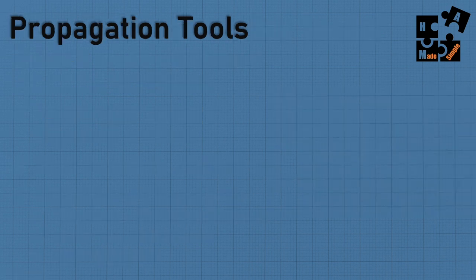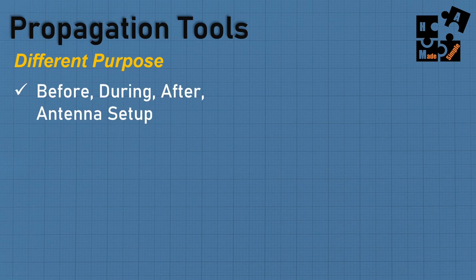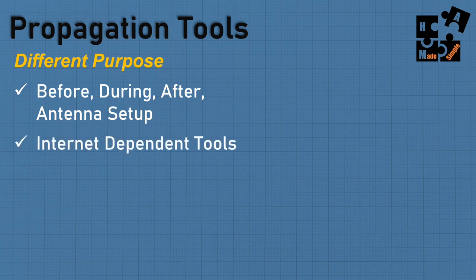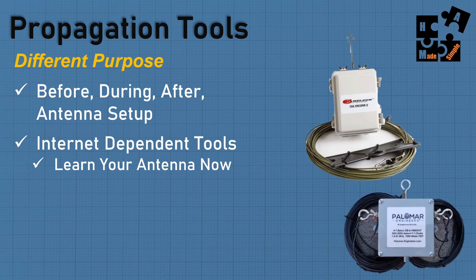There are different tools out there, and they all serve different purposes. One I'll use before I even transmit to find out what's out there. There are ones you can use during transmission, and ones you use after to see where you've been. Someone's going to say these are internet-dependent tools — yes, they are. So when stuff hits the fan, they're not going to be available. That's why you need to learn these tools now and how they work with your antenna.